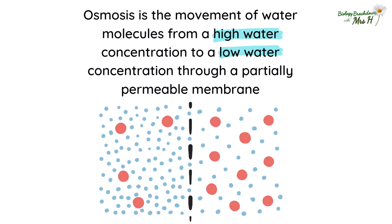Let's look at this partially permeable membrane. You can see that the blue water molecules are small enough to move through the gaps. So this membrane is permeable, or allows water molecules to move through.